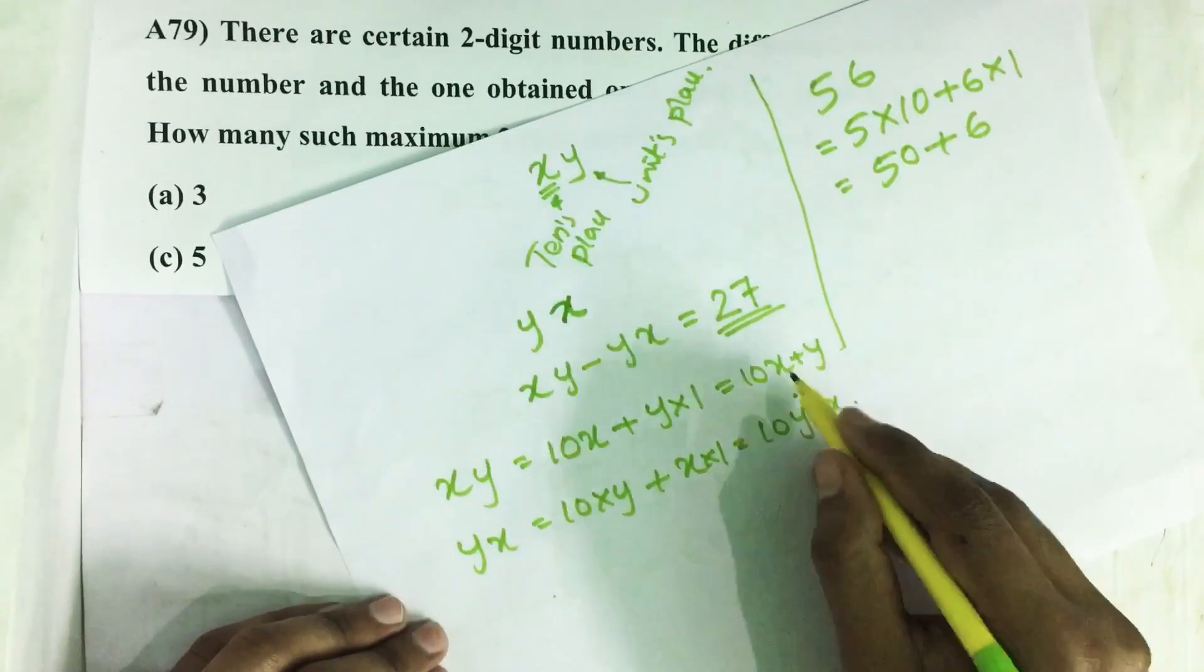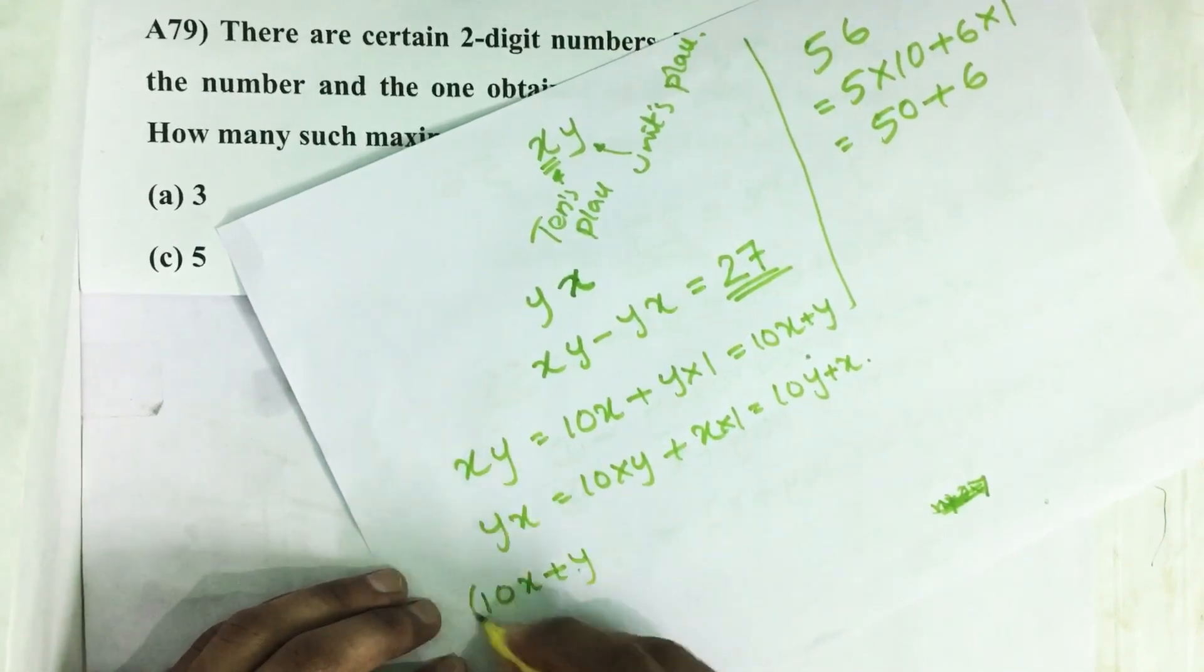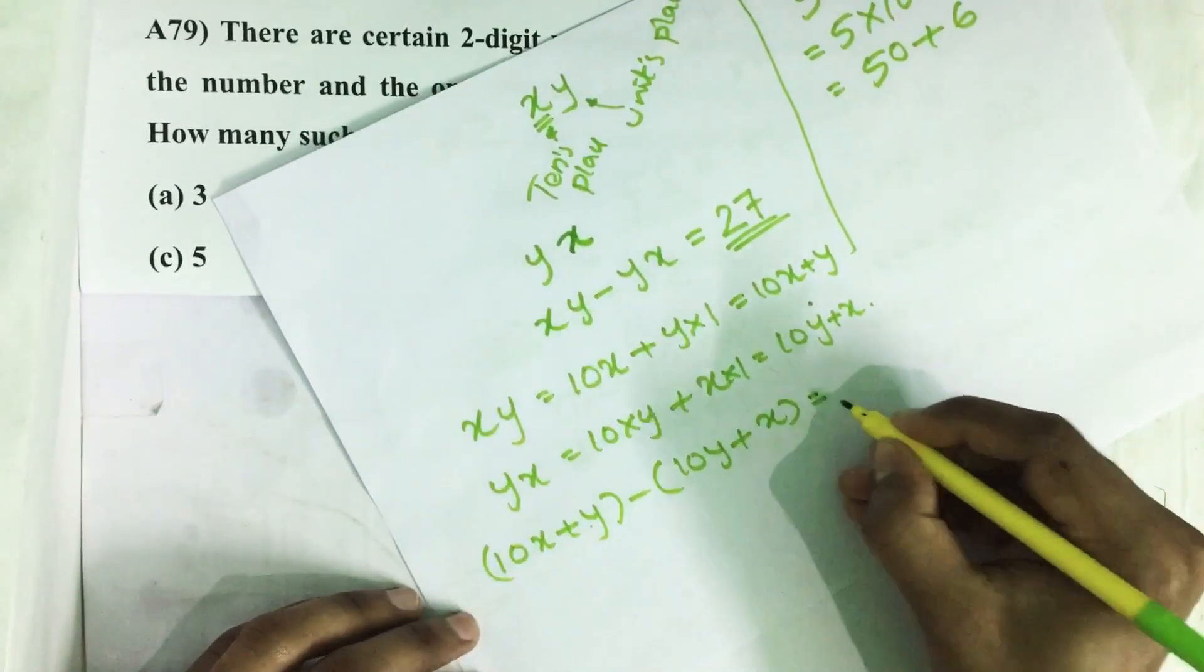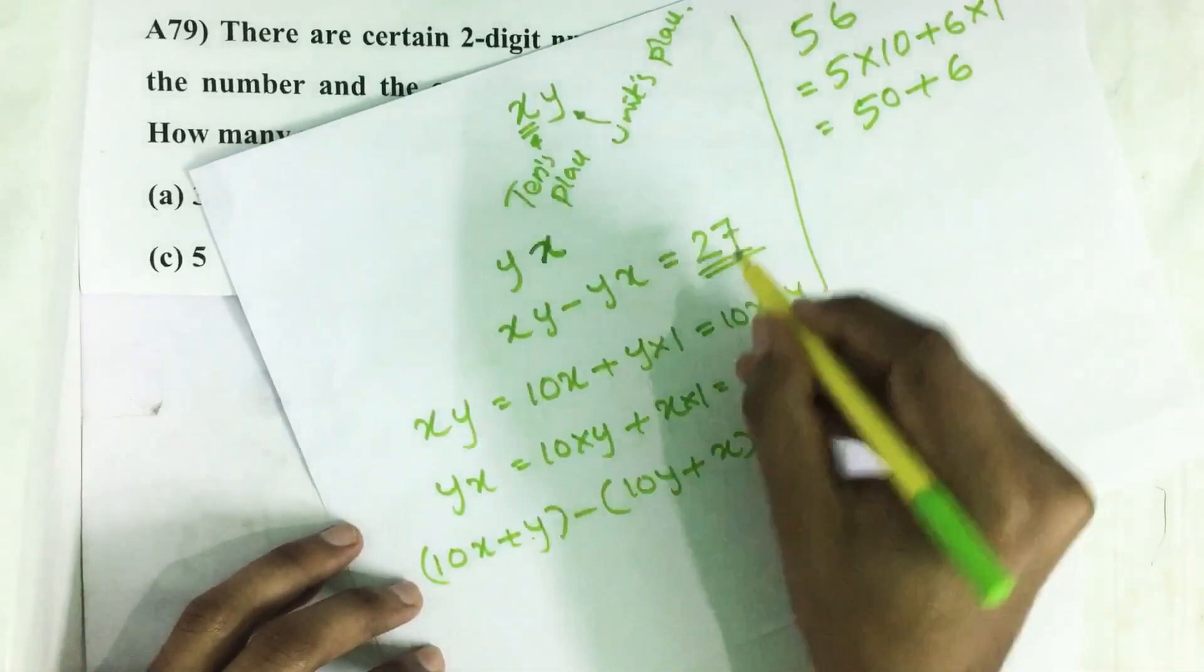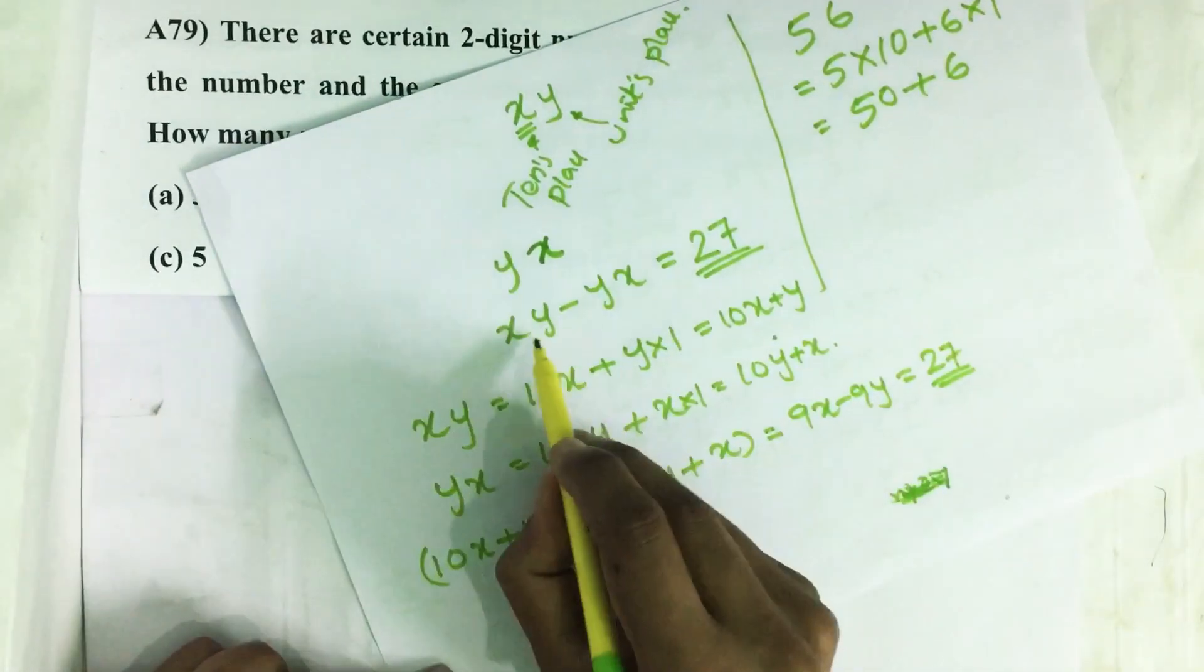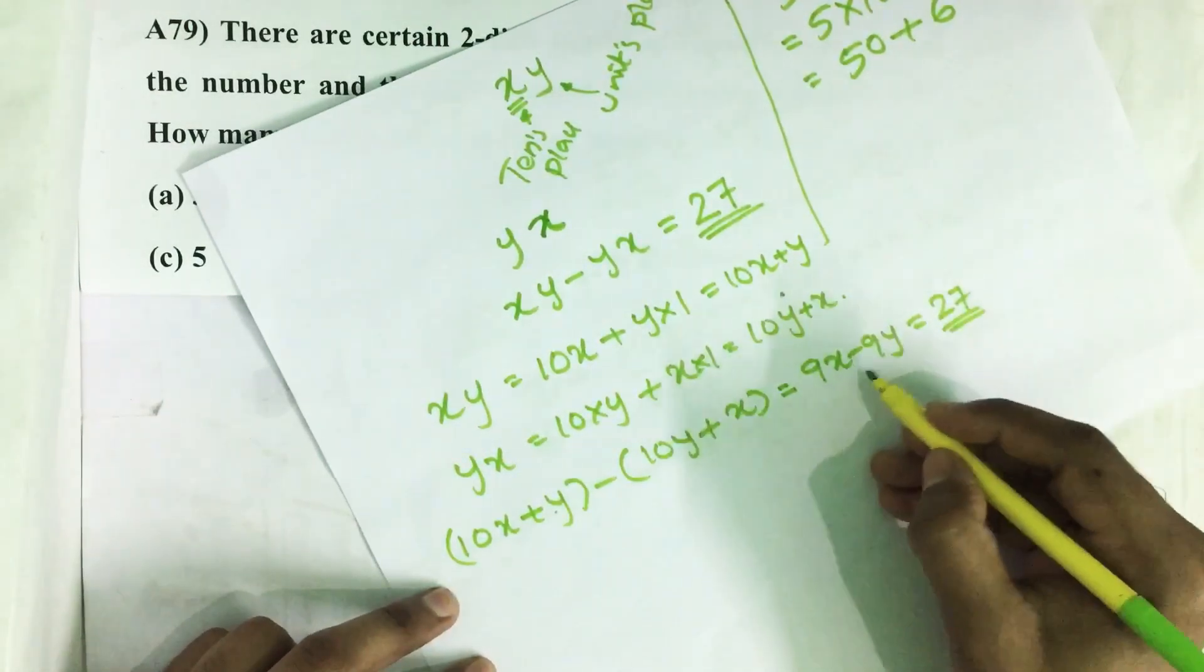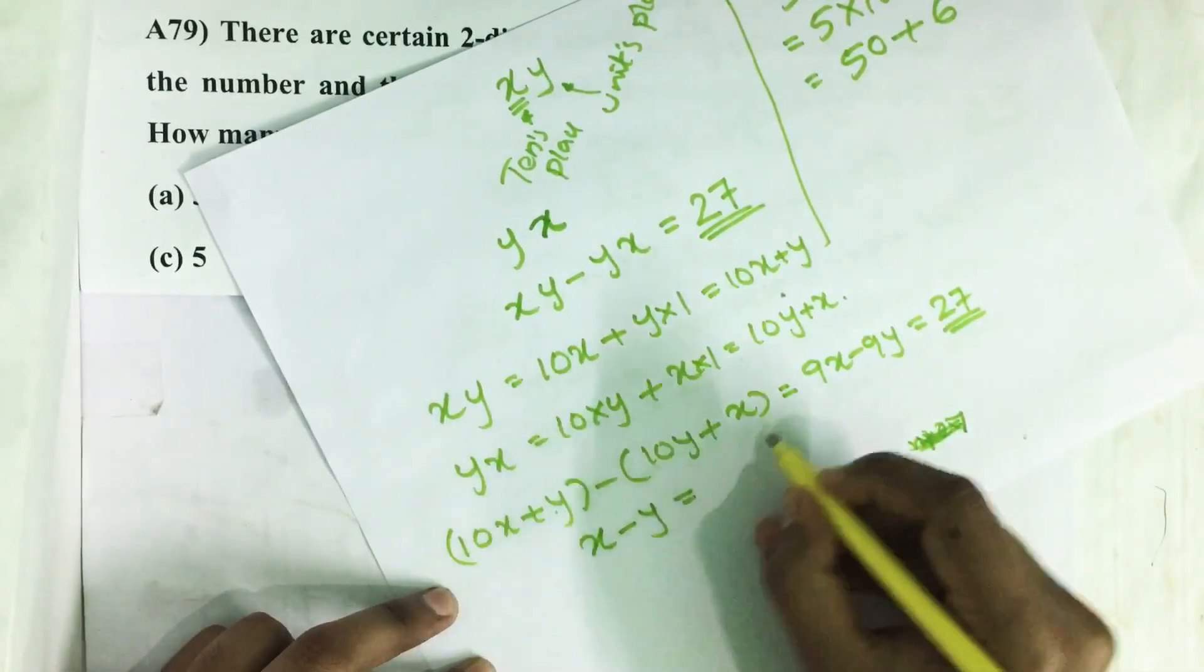We are taking the difference of these two. Then we get 10X plus Y minus 10Y plus X, which equals 9X minus 9Y, and we should get 27 all the time. So how many such two-digit numbers? That is the question. So by dividing this equation by 9, after simplifying we get X minus Y equal to...